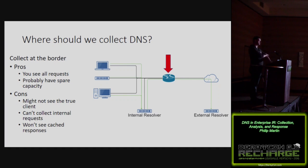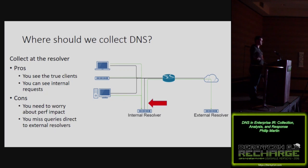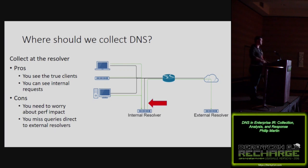You can collect at the resolver — you see true client IPs, internal requests, all of that. The problem is you'll miss anything that skips your internal resolvers. This happens both benignly — a lot of IoT devices hard-code DNS servers — and maliciously, as a lot of malware hard-codes DNS servers to either point users to a bad resolver or to skip your monitoring.